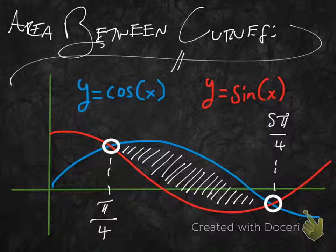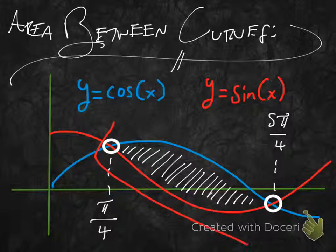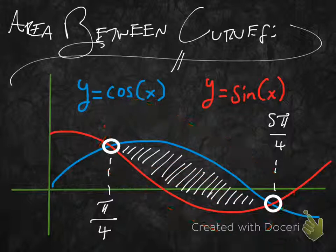So I've got two functions here. The blue function on my graph is y equals cosine x, and the red function is y equals sine x. I'm interested in these two x values: 5π/4 and π/4. These are where the two functions intersect one another. Everywhere in between that, the functions have space between them where we can measure the area.